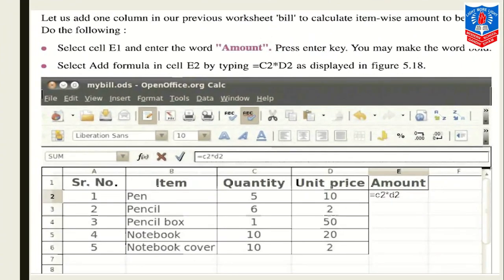Now let us add one column in our previous worksheet, 'bill', to calculate item-wise amount to be paid. We are having up till D: A, B, C, D. We have used 4 columns and 6 rows. Now we have to add one more field in this bill document. So that field is called 'amount'. How will we enter? We will go to select cell E1. This is E1. And enter the word 'amount' over here and press the Enter key. Here is the word data.